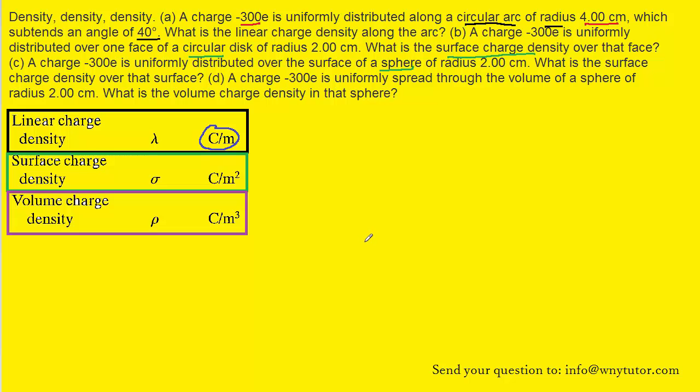Finally, on to part D, which now places this charge uniformly spread through a volume of a sphere. And it's asking us to calculate the volume charge density. And so for volume charge density, we have the Greek letter rho. And to calculate that, we take the amount of charge and then simply divide by the volume that that charge occupies.